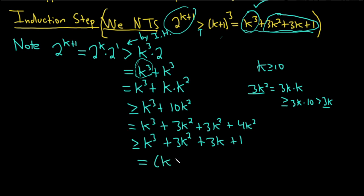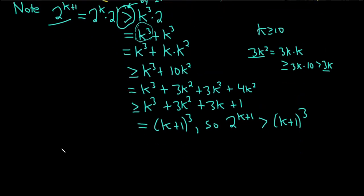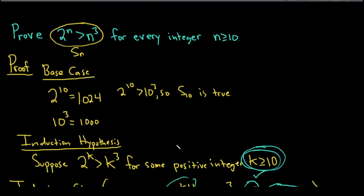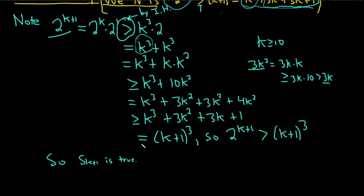And that equals (k+1) cubed. So we have that 2 to the k plus 1 is greater than (k+1) cubed. That's precisely what we had to show — the statement being true for n equals k plus 1. So s of k plus 1 is true. We finished the proof: we showed the base case was true, and that if it's true when n equals k, it's true when n equals k plus 1.